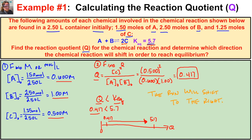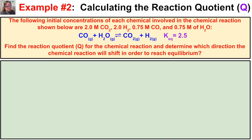Let's look at a second example. The following initial concentrations are given: 2.0 M CO₂, 2.0 M H₂ gas, 0.75 M carbon monoxide gas, and 0.75 M water vapor. The equilibrium constant Keq is 2.5. We need to find the reaction quotient Q and determine which direction the reaction will shift.